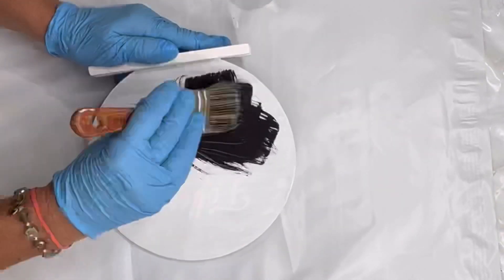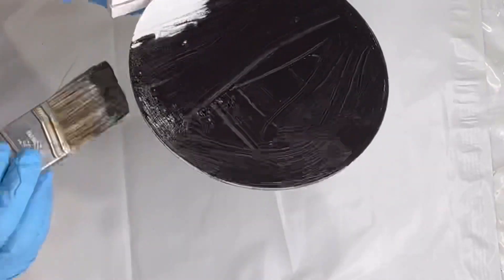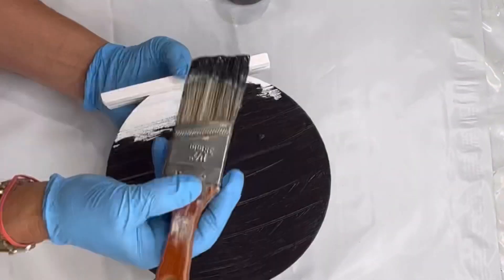Once black, I allowed that to dry. Then I painted the circle that was primed also black.